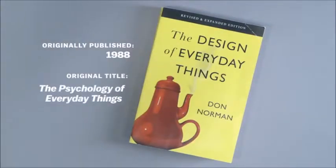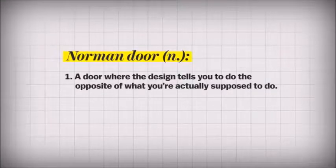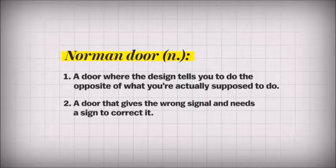If I continually get a door wrong, is it my fault? In fact, if you continually get it wrong, and if other people continue to get it wrong, it's a good sign that it's a really bad door. A Norman door is one where the design tells you to do the opposite of what you're actually supposed to do, or gives the wrong signal and needs a sign to correct it.